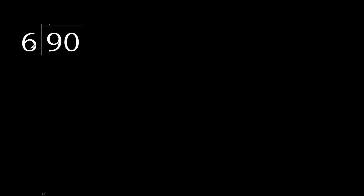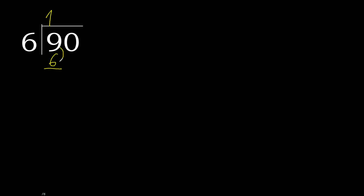90 divided by 6. With 9, 6 multiplied by which number is nearest to 9 but not greater? 6 multiplied by 2 is 12 — 12 is greater. 6 multiplied by 1 is 6, which is not greater. 9 minus 6 is 3.